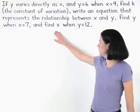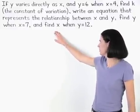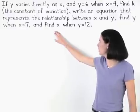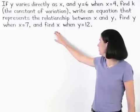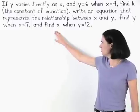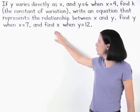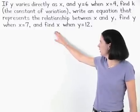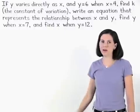If y varies directly as x and y equals 6 when x equals 4, find k, the constant of variation, write an equation that represents the relationship between x and y, find y when x equals 7, and find x when y equals 12.